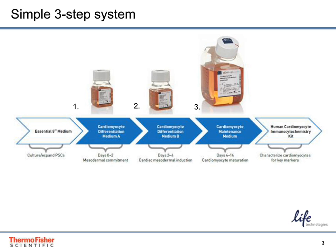Step three: at day four, replace Cardiomyocyte Differentiation Medium B with Cardiomyocyte Maintenance Medium until the cells are contracting in culture or are ready to be assayed. Afterwards, you may wish to characterize the differentiated cells using the Human Cardiomyocyte Immunocytochemistry Kit, or continue to culture cells in the Cardiomyocyte Maintenance Medium, which is also sold separately.